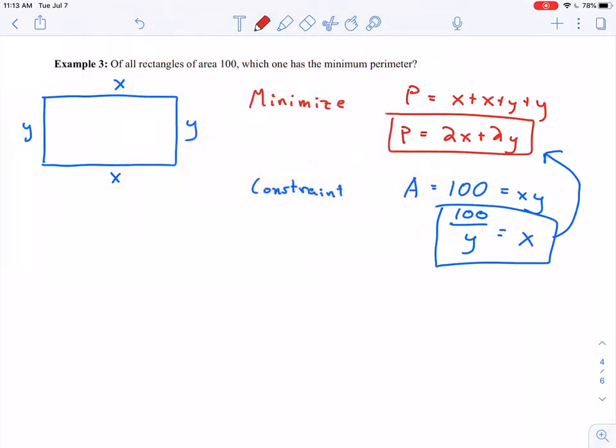So my objective function is now P equals 2x. Rather than x, I'm going to have 100 divided by y plus 2y. We can simplify this a little: P equals 200 divided by y plus 2y. So here's the objective function, and now I just have the one single variable of y. That's good to know.